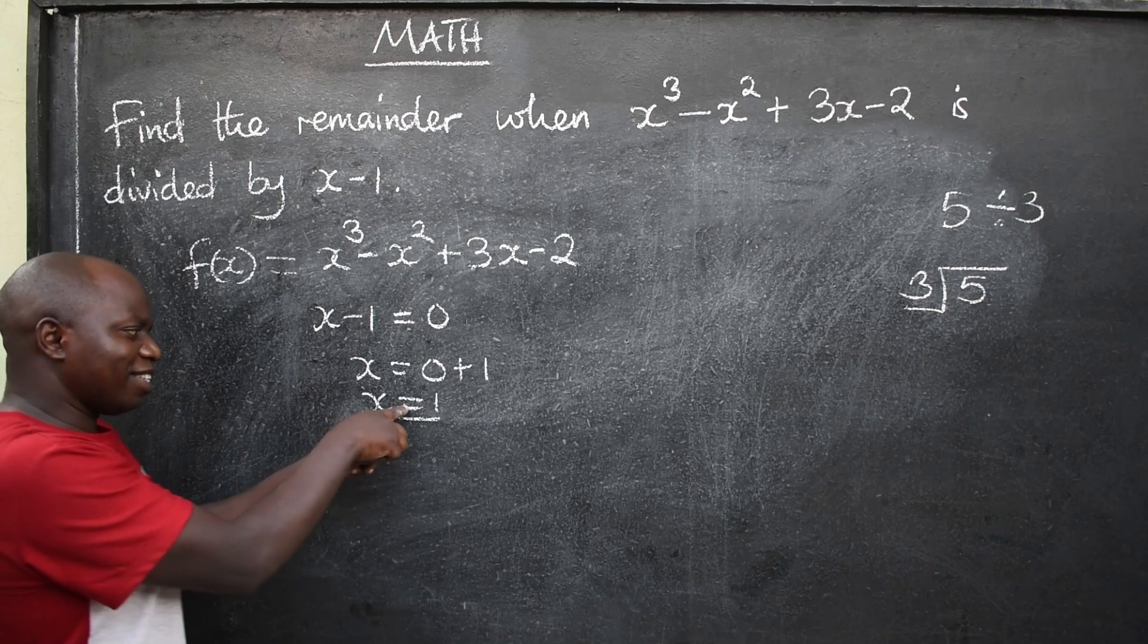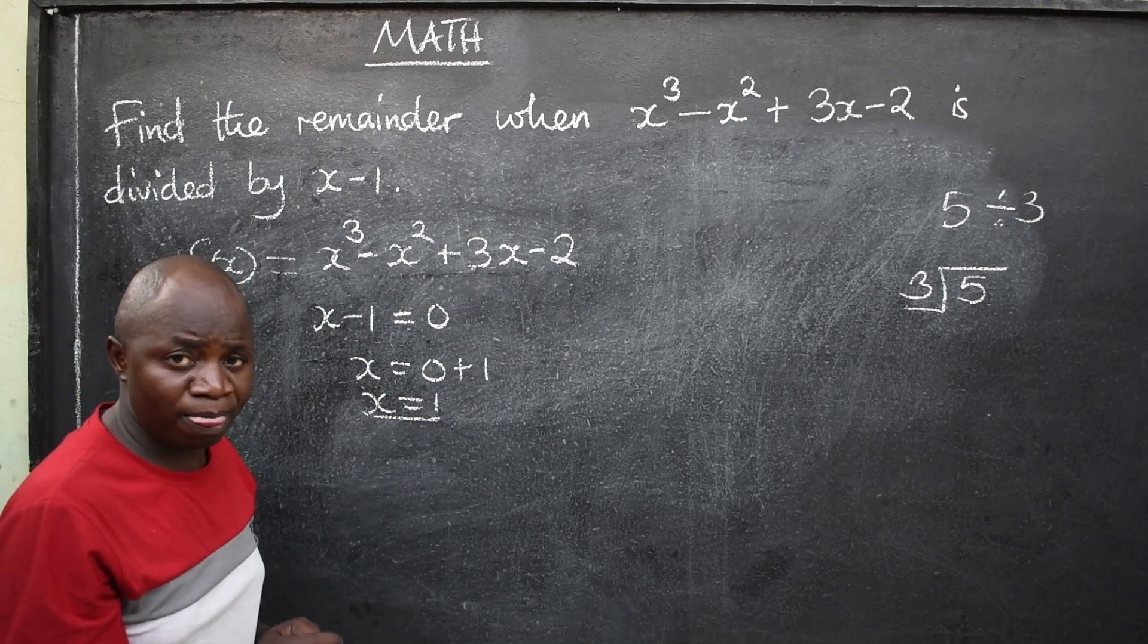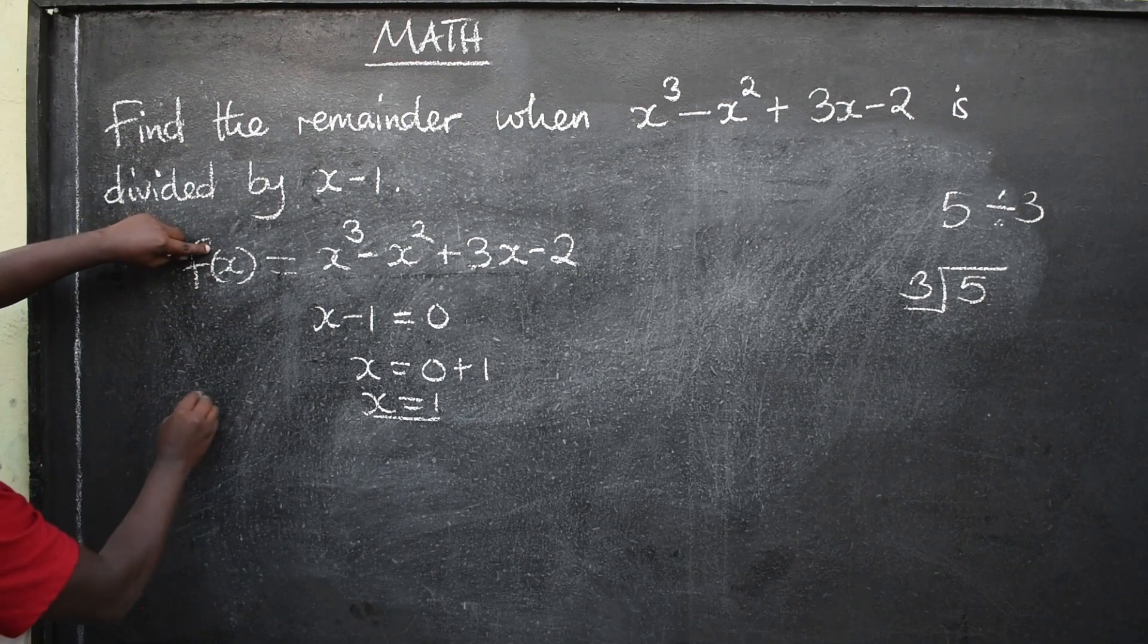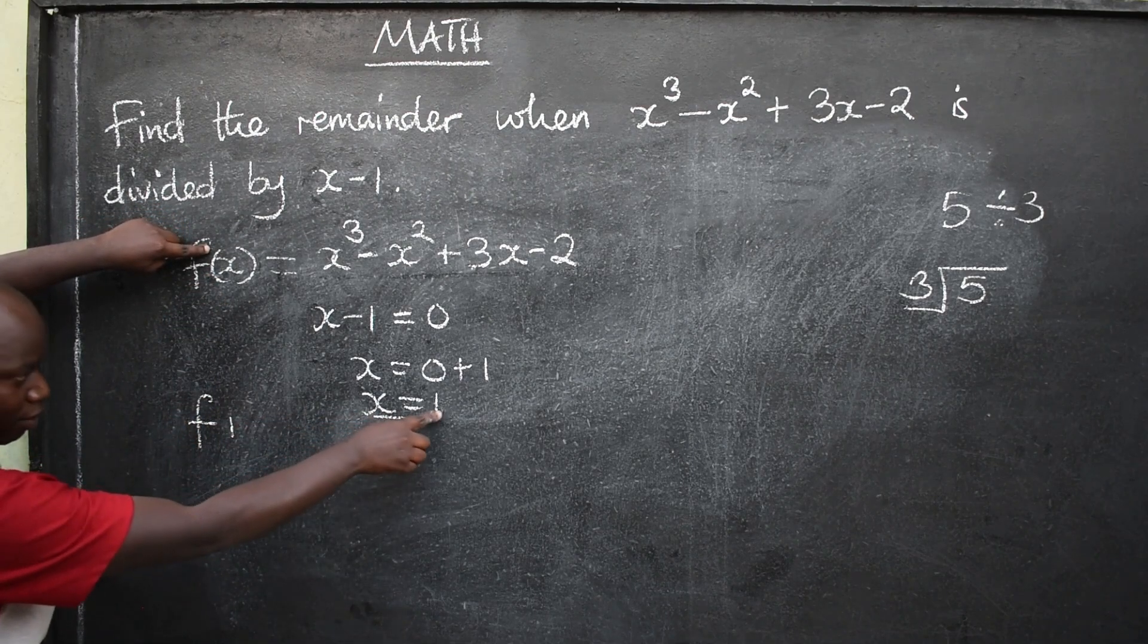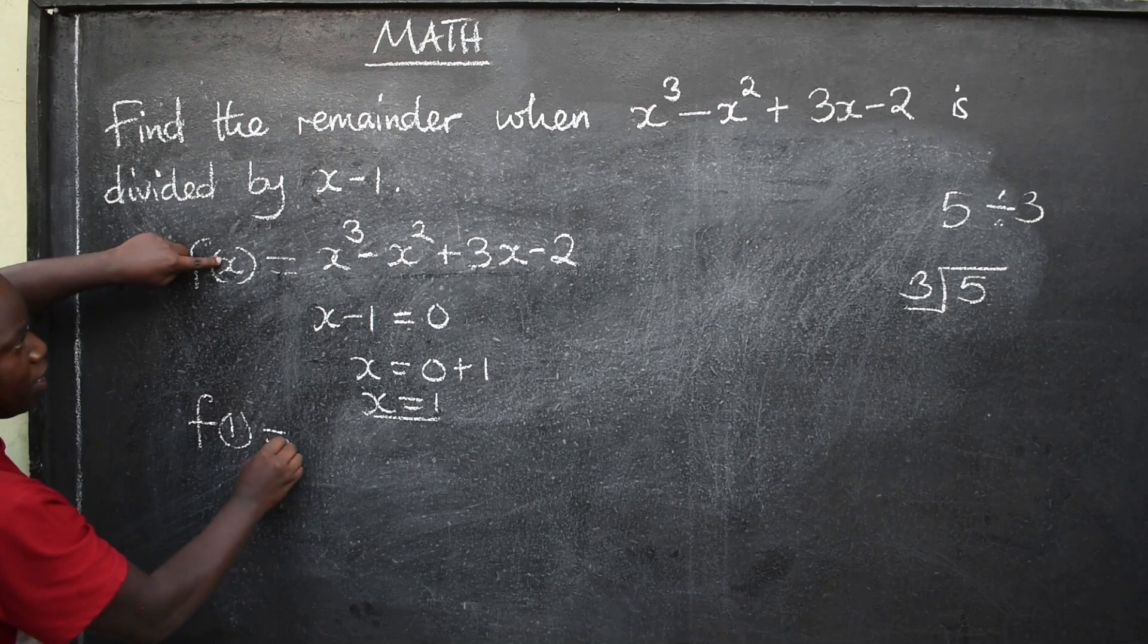Then, since now x is equal to 1, you are now going to substitute in this polynomial, which you are going to say, the function of 1, this one here now, you are substituting where there is x, will now be equal to, here,